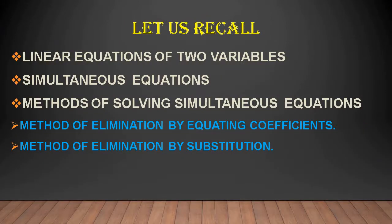Children, let us recall what we have studied in the previous module. We have studied about linear equations in two variables. An equation of the form AX plus BY plus C is equal to 0, where A, B, C are real numbers such that A is not equal to 0, B is not equal to 0, is called the general form of a linear equation in two variables X and Y, if and only if A and B both are not 0 at the same time.